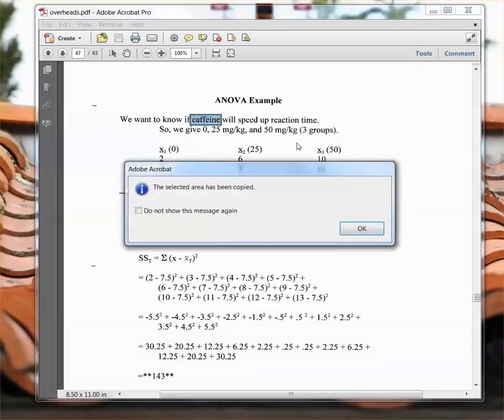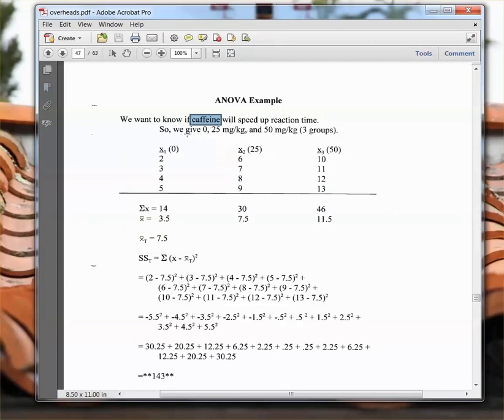For this example, we're going to see if caffeine, that's our independent variable, will speed up reaction time, which is our dependent variable. We're going to give zero milligrams, so control group that gets no caffeine, 25 milligrams per kilogram of caffeine, and 50 milligrams per kilogram in our third group. These are different subjects, and this is our reaction time data. I've cooked up these data to be very simple so you can see how the analysis of variance works. This is just an arbitrarily generated example, but this will illustrate how to do this analysis of variance in a simple way.